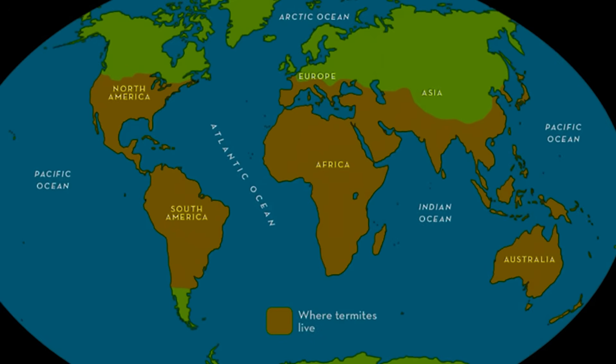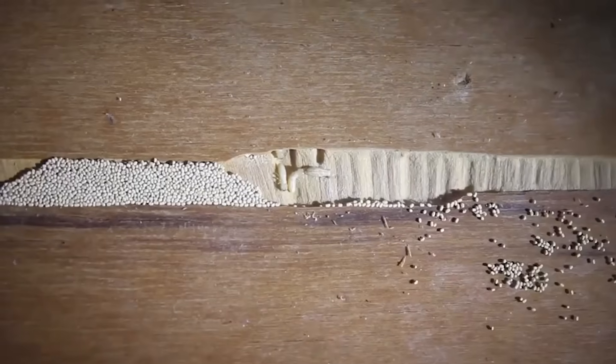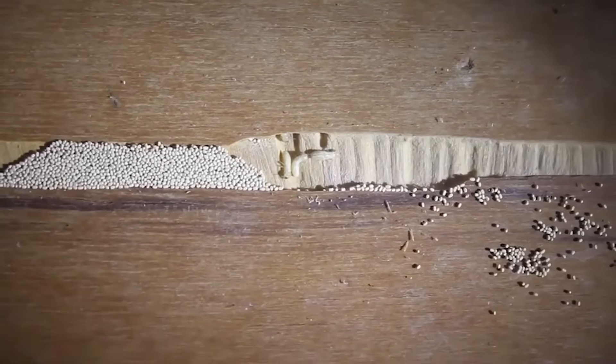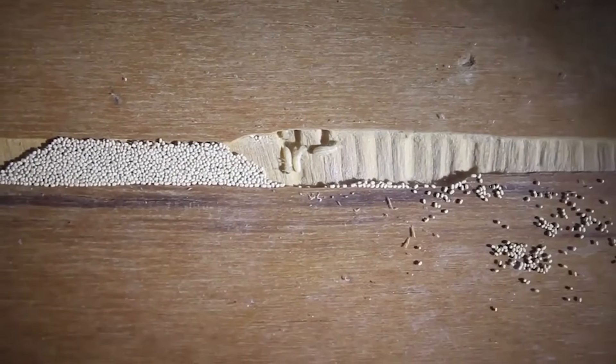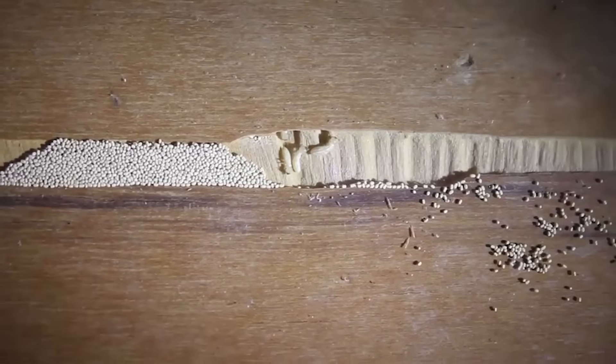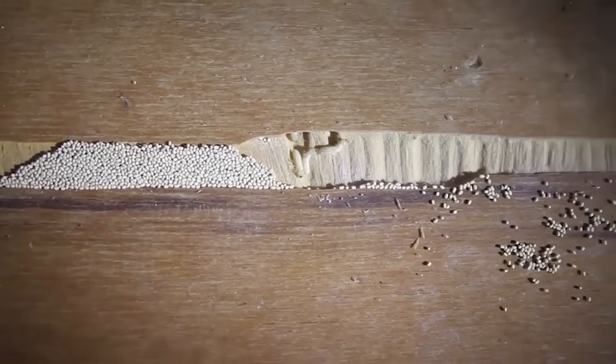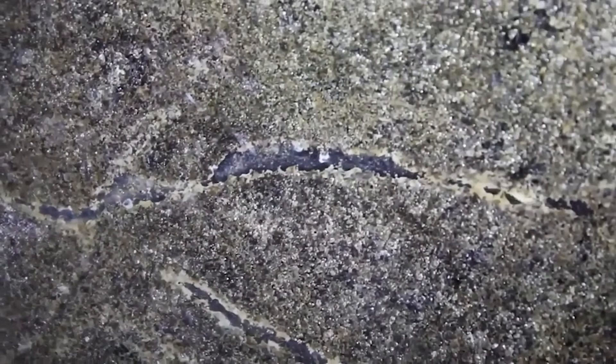Termites struggle far more than ants do with cold temperatures because the upkeep of their gut microbiome is made even more difficult by the cold. And so although some are somewhat adapted to surviving the winter, it's usually through very specific circumstances that are not conducive to the entire species surviving in the northern hemisphere. Here's a quick list of termite habitats.